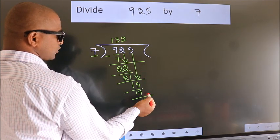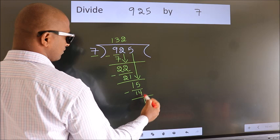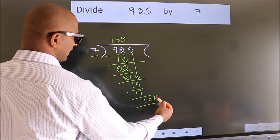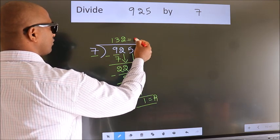No more numbers to bring it down. So we stop here. This is our remainder. This is our quotient.